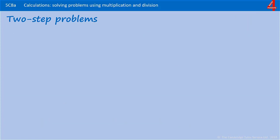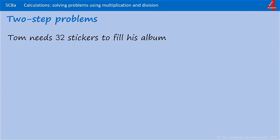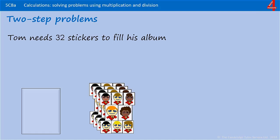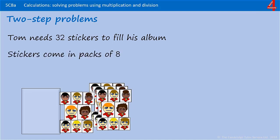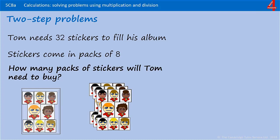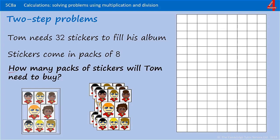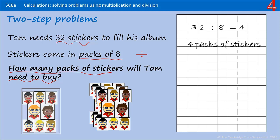The first part of the problem: Tom needs 32 stickers to fill his album, and stickers come in packs of eight. How many packs of stickers will Tom need to buy? He needs 32 and they come in packs of eight, so this is a division question: 32 divided by 8. If you know your eight times tables, you'll know that there are four lots of eight in 32. So Tom needs to buy four packets of stickers.